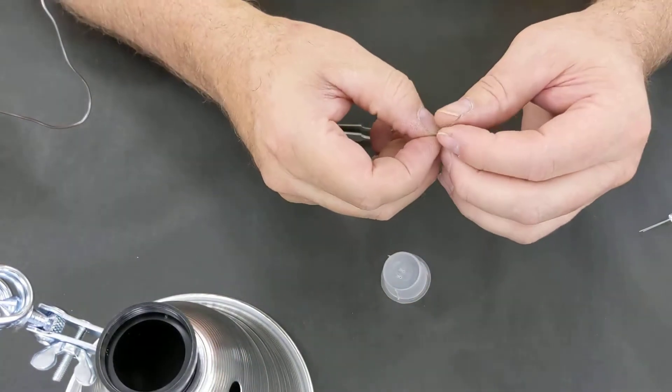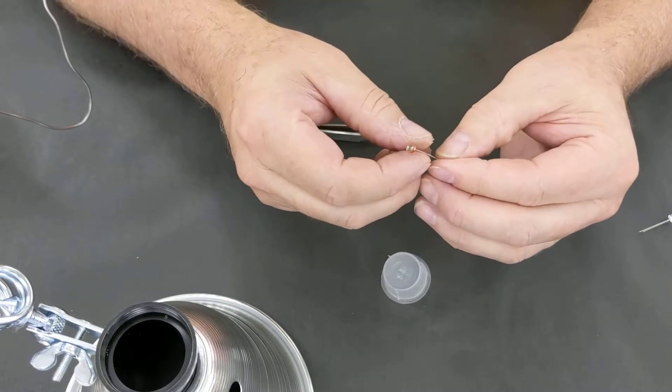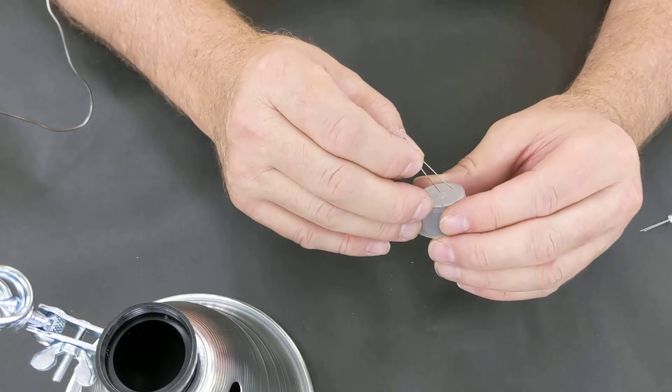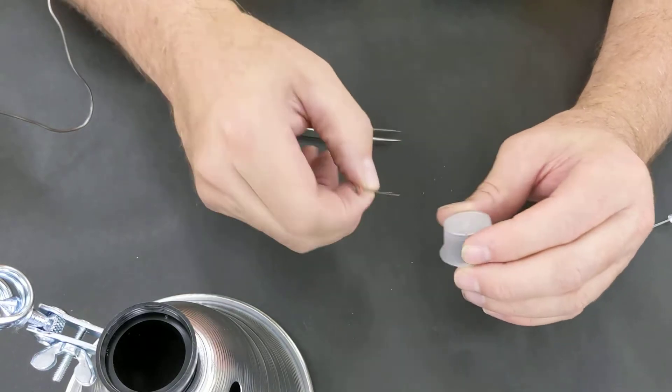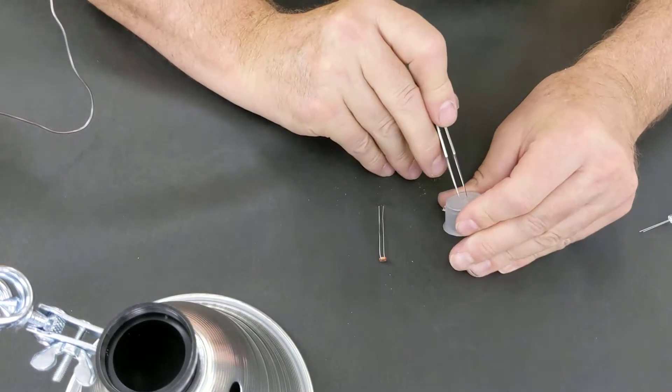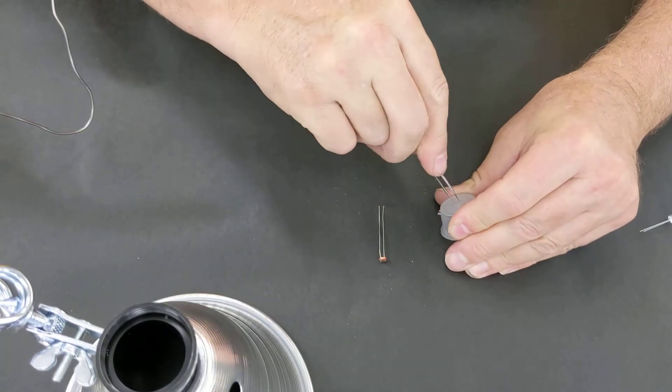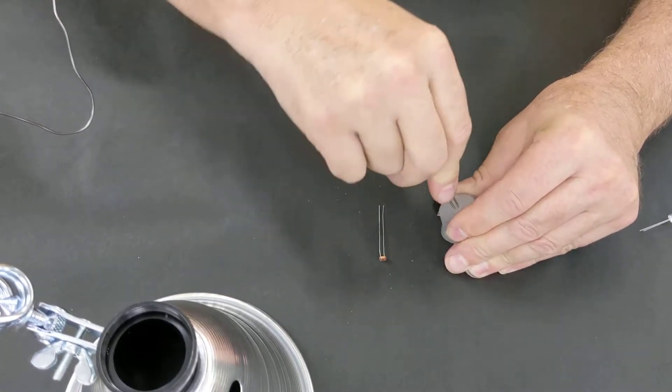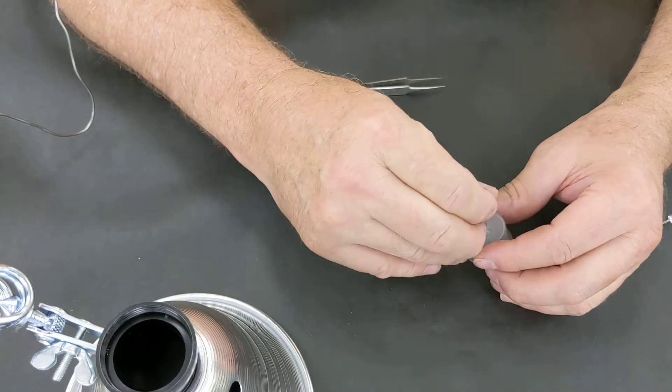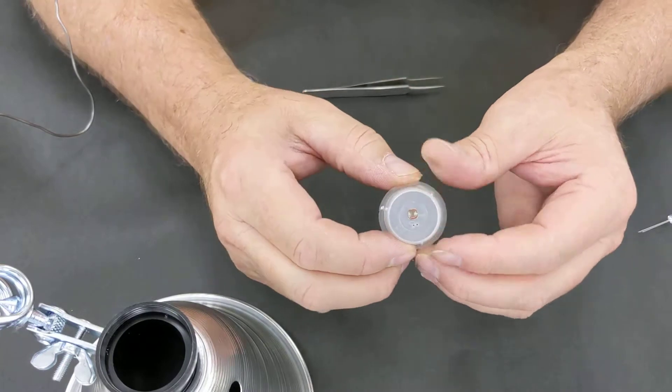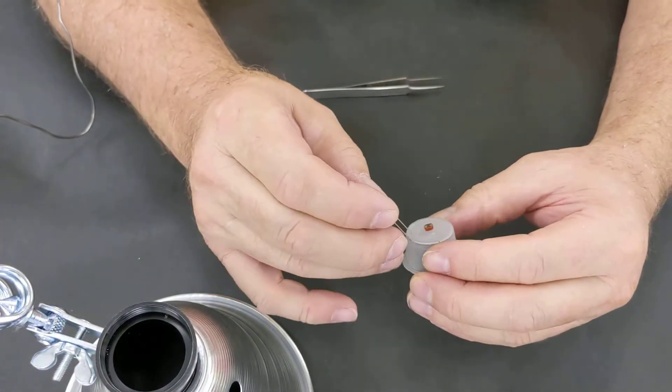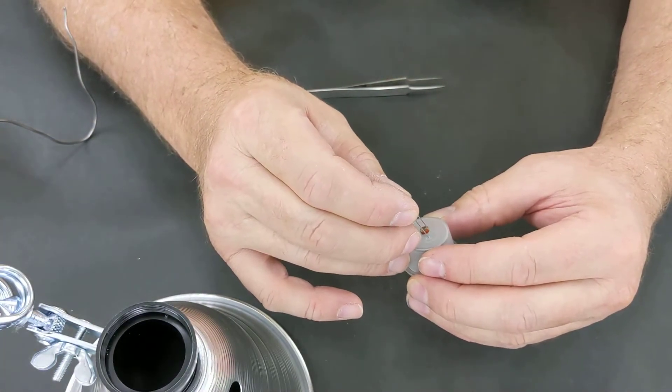I've already got a hot melt glue gun and soldering iron warming up. You want the LDR in the middle because it needs to be in the focal point. You might need to make the hole slightly larger. You can use anything that fits, like a piece of cardboard, or just glue it in with silicone.